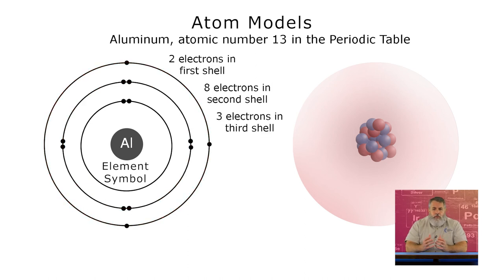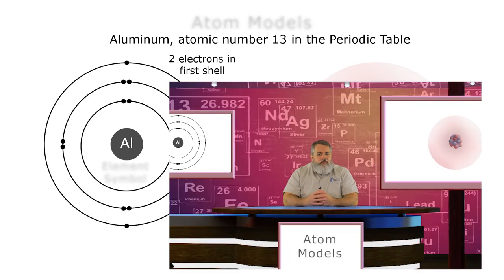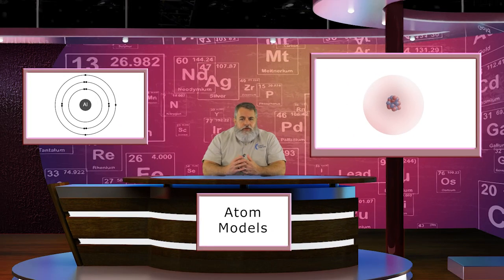Neither of these models is right or wrong, or better or worse. They serve different purposes, and the best model is the one that serves the desired purpose the best. Since most chemists are concerned with electrons, their shells, and the number of electrons in each shell, most chemists use the Bohr model, and so will we.